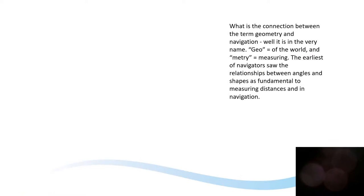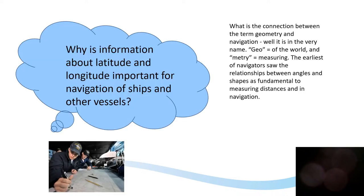Now we've learnt the maths of geometry — how can we use this for navigation? What's the connection between geometry and navigation? Well, it's in the very name. Geo means of the world and metri meaning measuring. The earliest navigators saw the relationships between angles and shapes as fundamental to measuring distances and helping in navigation. So why is it really important to understand latitude and longitude so that we can navigate ships and other vessels?